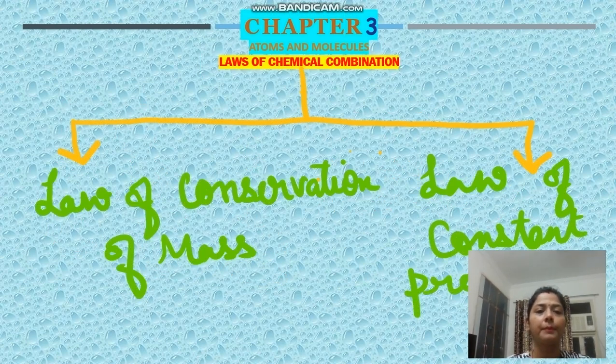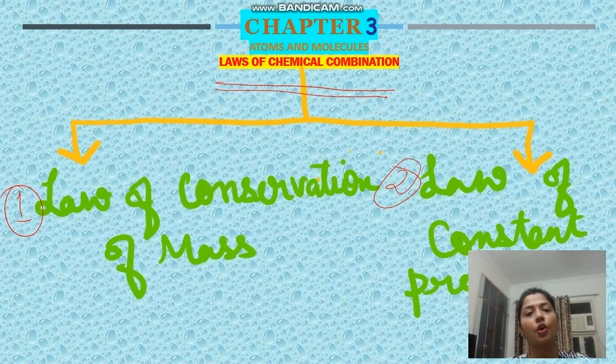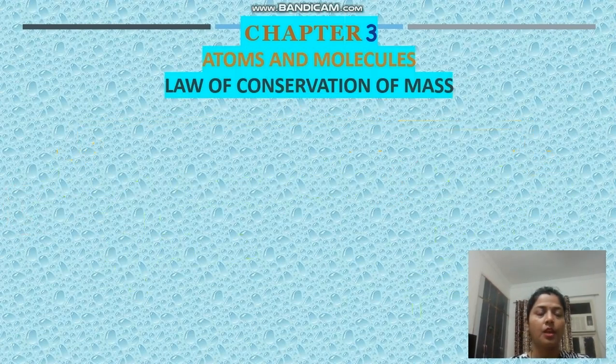Let's come to the next part of the chapter: laws of chemical combination. There are different types of laws, but in standard 9 we have to learn only two types. The first one is law of conservation of mass and the second one is law of constant proportion.